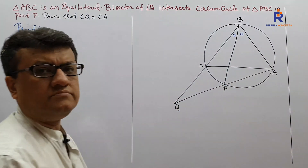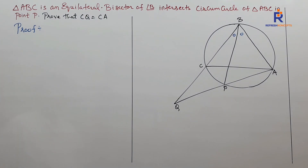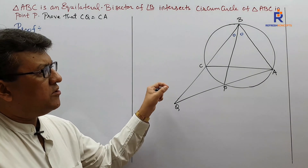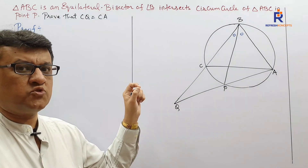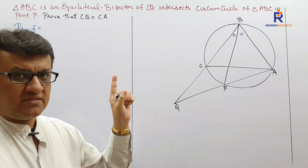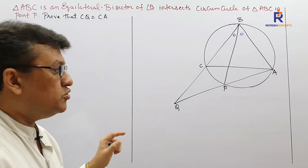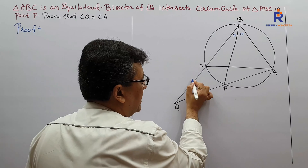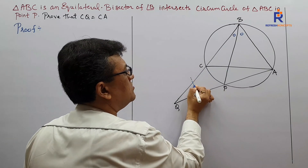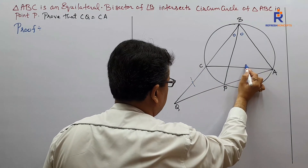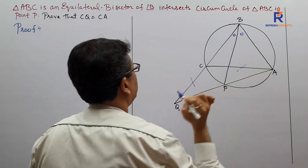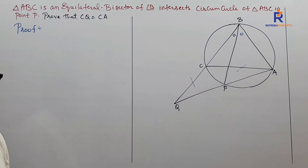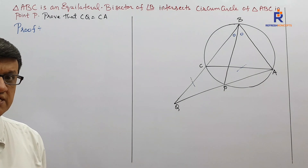We need to prove that CQ equals CA. Whatever is drawn with a dotted line is what we are supposed to prove — it is not given to us. So I intend to prove CQ equals CA.